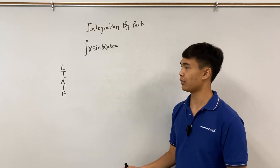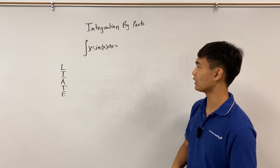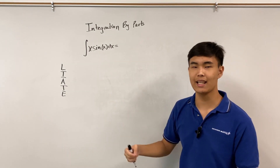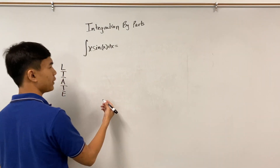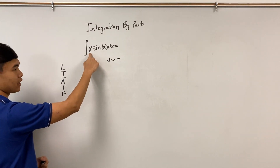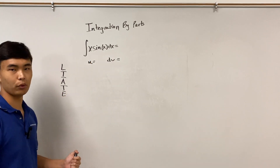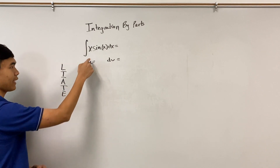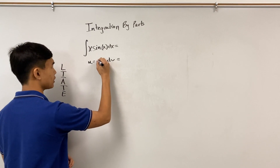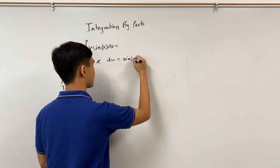Now let's solve an example. We're asked to find the indefinite integral of x sin(x) dx. You can see that two functions are being multiplied by each other, which is a key indicator that you need integration by parts. We need to pick our u and dv. x is a polynomial, so it's in the A category. sin(x) is normal trig, so it's in the T category. Since x ranks higher than sin(x), we have u equals x and dv equals sin(x) dx.